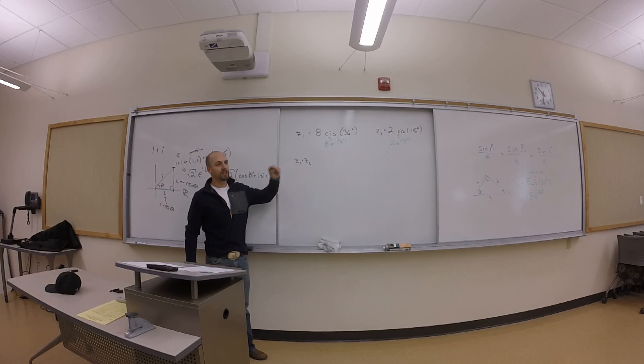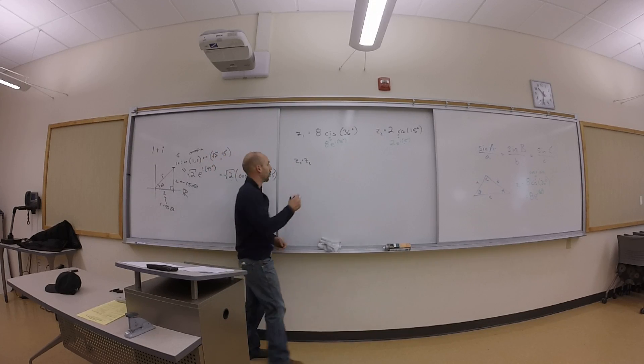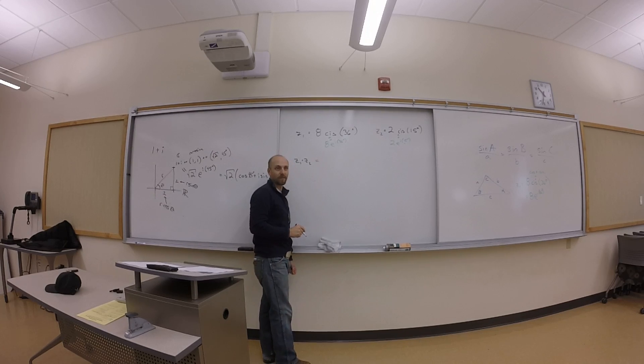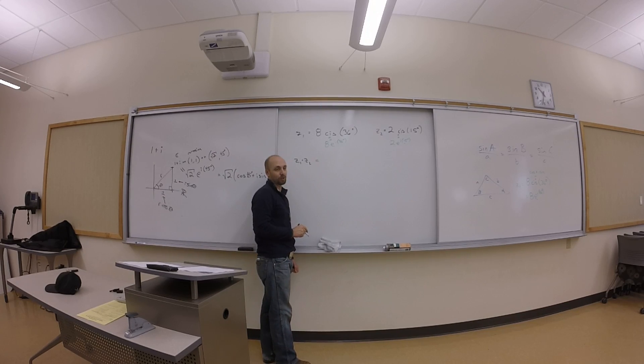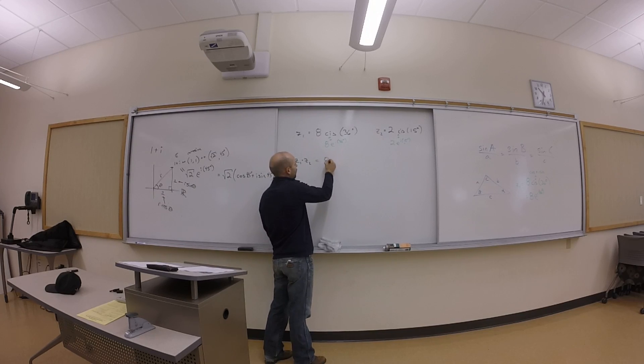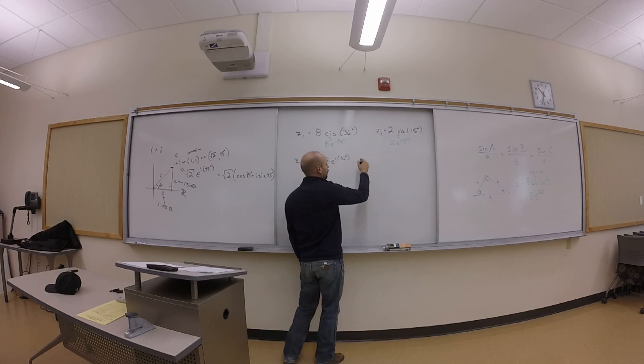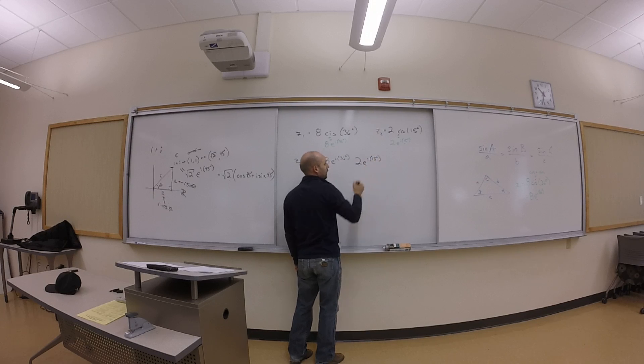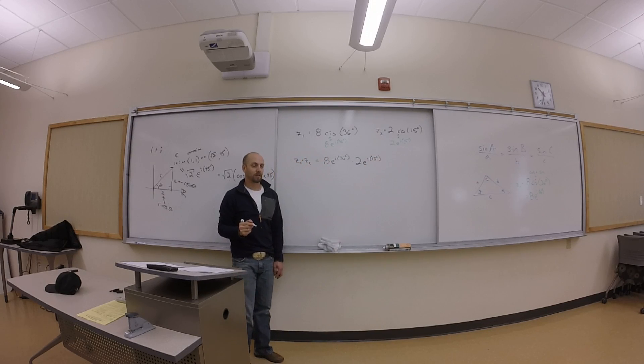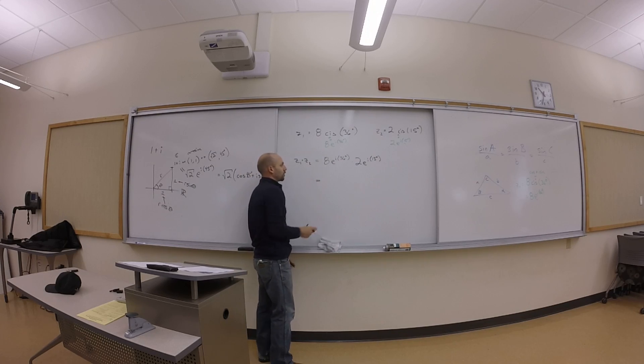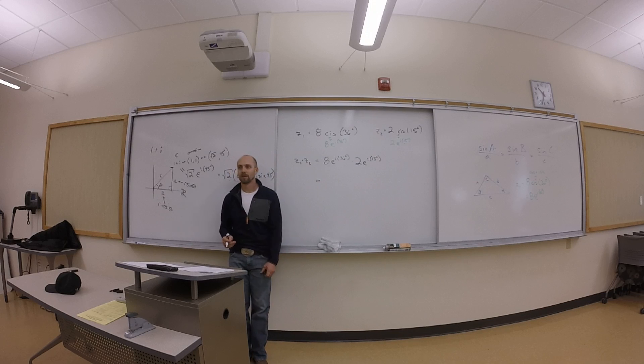Now multiplying Z1 times Z2 consists of multiplying the stuff in green together, right? Like Z1 is that, so let me write that. And then I'm multiplying by 2e to the i 15 degrees. And now go forth and multiply, right? Okay, so one of the things you can multiply right off the bat: eight and two. Eight and two is sixteen.